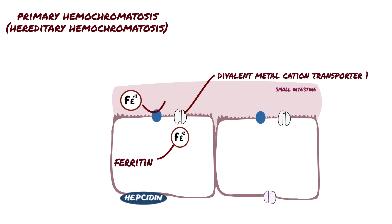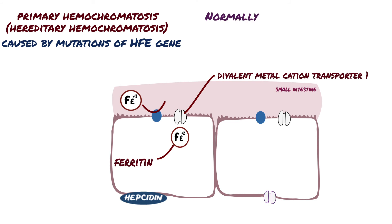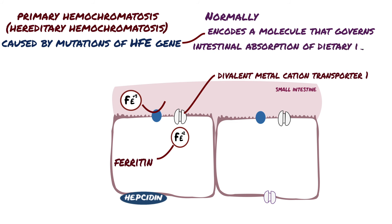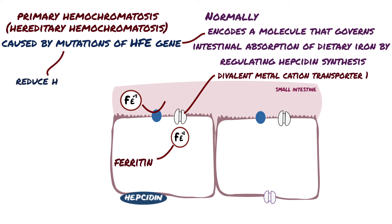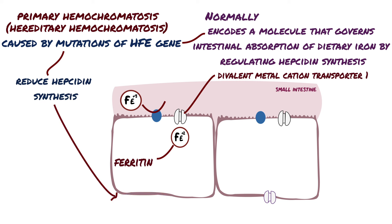The adult form of hemochromatosis is almost always caused by mutations of the HFE gene. Normally, the HFE gene encodes a molecule that governs intestinal absorption of dietary iron by regulating hepcidin synthesis. However, mutations in the HFE gene reduce hepcidin synthesis, thus reducing the level of circulating plasma hepcidin. The decreased hepcidin-ferroportin interaction eventually leads to more iron outward flow from cells in the small intestinal mucosa, causing a rise in iron concentration and a systemic overload.